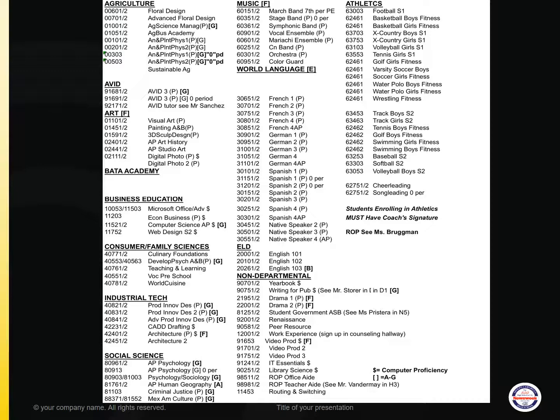Under Consumer and Family Sciences, we offer Culinary, Developmental Psychology A and B (a prerequisite for Teaching and Learning or the Preschool class), and World Cuisine. Under Industrial Tech, we offer Product Innovation Design 1 and 2, Advanced Product Innovation Design, CAD Drafting (a prerequisite for Architecture), and Architecture 2. Social Science elective options include AP Psychology (also offered zero period), College Prep Psychology and Sociology, AP Human Geography, Criminal Justice (semester only), and Mexican American Culture.